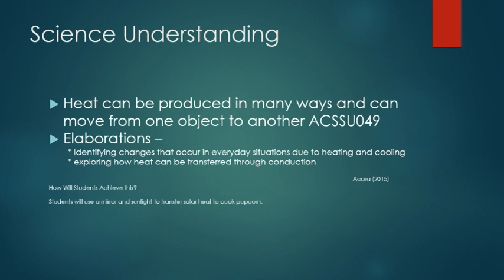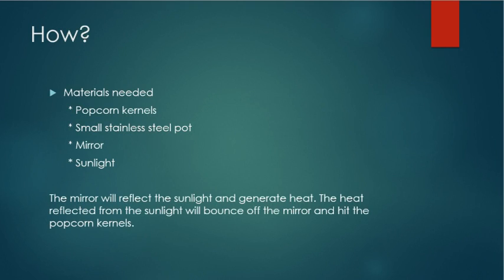Students will use a mirror and sunlight to transfer solar heat to cook popcorn. The materials needed will be popcorn kernels, a small stainless steel pot, a mirror, and sunlight. The mirror will reflect the sunlight and generate heat. The heat reflected from the sunlight will bounce off the mirror and hit the popcorn kernels.